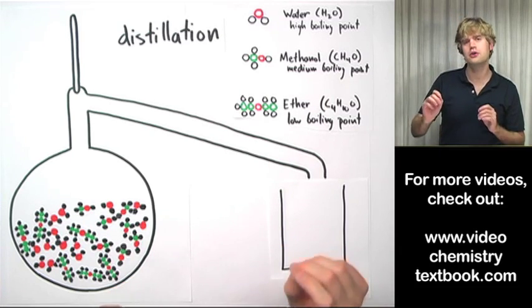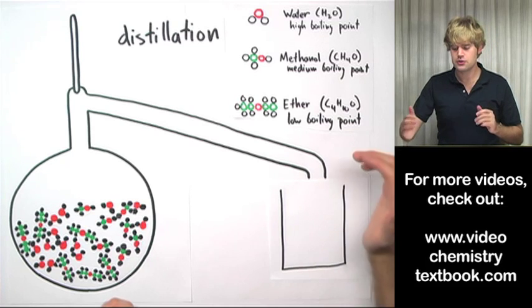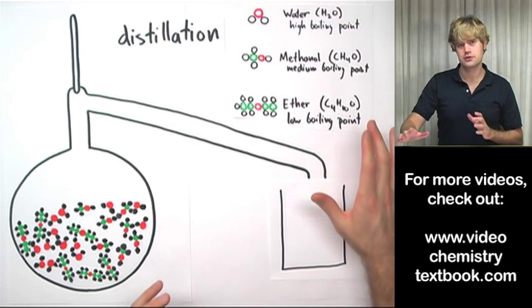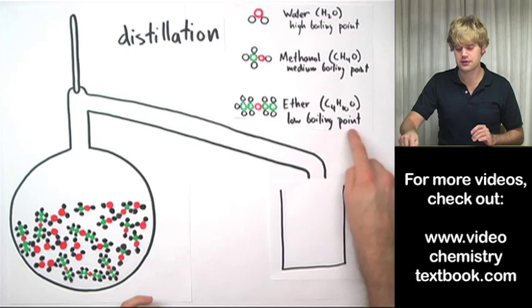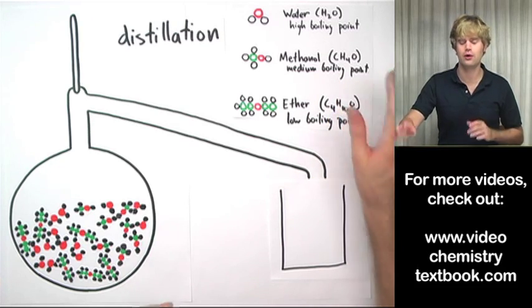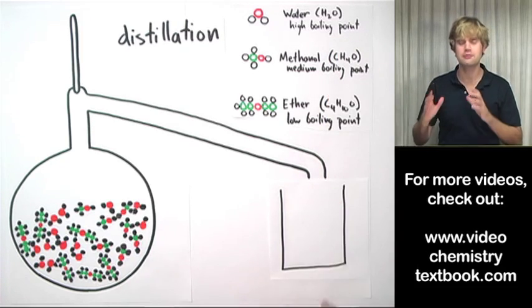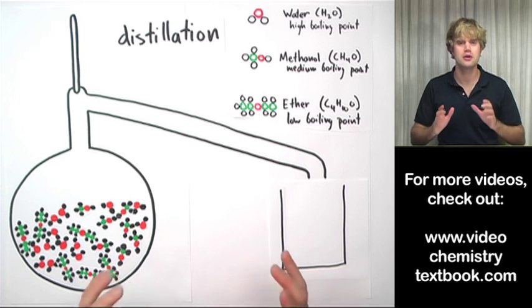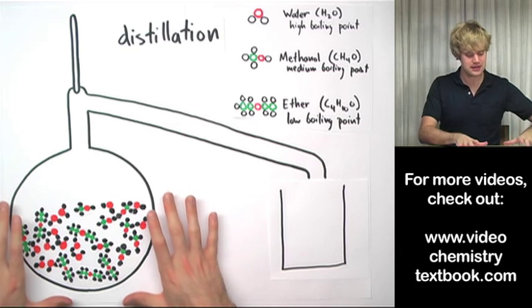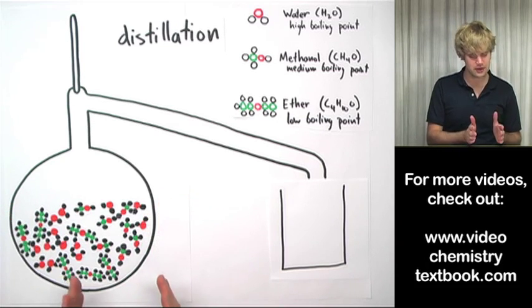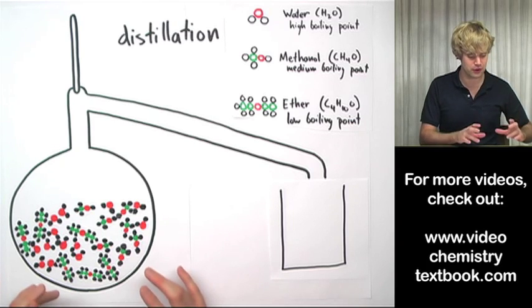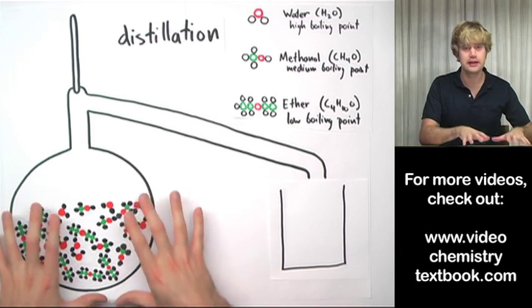So the way I'm going to do this is by using their boiling points. As you can see, ether has a relatively low boiling point. Methanol has kind of a medium boiling point. Relatively speaking, water has a pretty high boiling point. I'm going to take this flask and underneath it I'm going to put a Bunsen burner or a hot plate, something to heat this liquid mixture up.